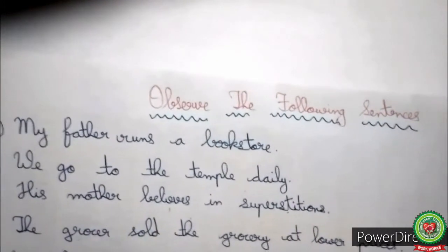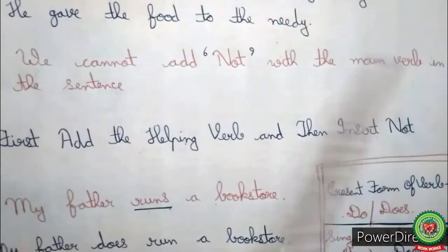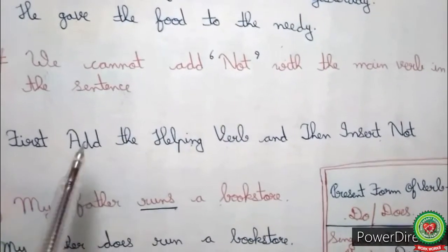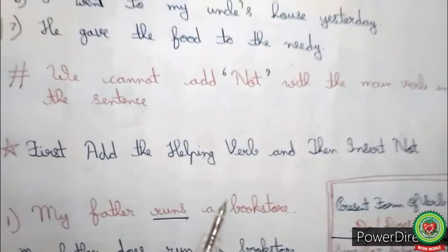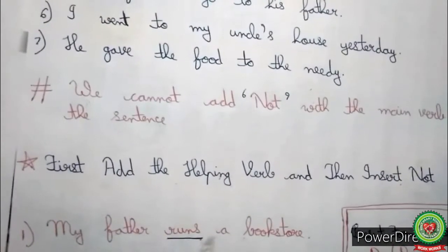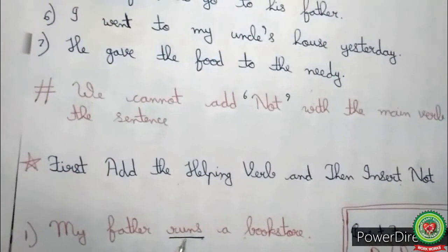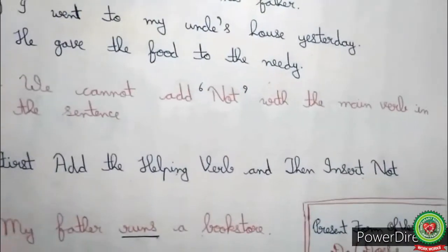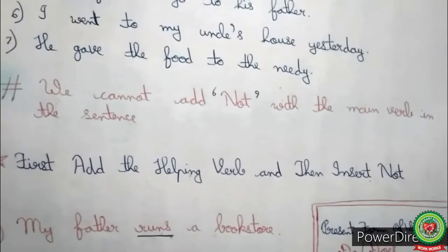Now, can we add 'not' with the main verb for changing these sentences into negative? No, we cannot add 'not' with the main verb. So how will we change these sentences into negative? We will first add a helping verb and then insert 'not.' For the first example, 'My father runs a bookstore' — 'runs' is the present form of the verb. Always remember: whenever the present form of verb is given, we add 'do' or 'does' as helping verbs.